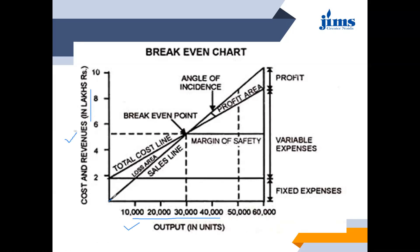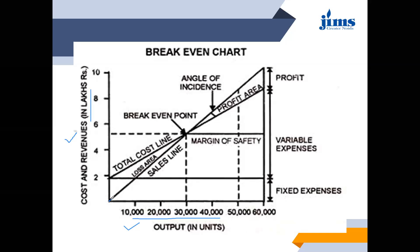The sales line will start from the zero point — this is the sales line. The cost line will not start from zero because there is always a fixed cost which cannot be zero even when the output is zero. So, cost line will never start from zero — this is the cost line. When the cost is more than sales, this area is known as the loss area. When the sales are more than cost, that is the profit area.